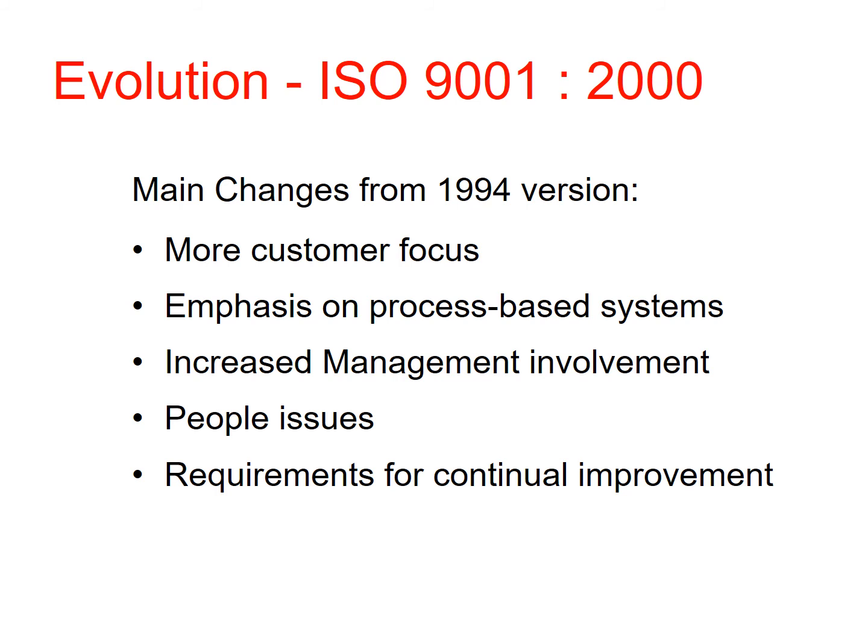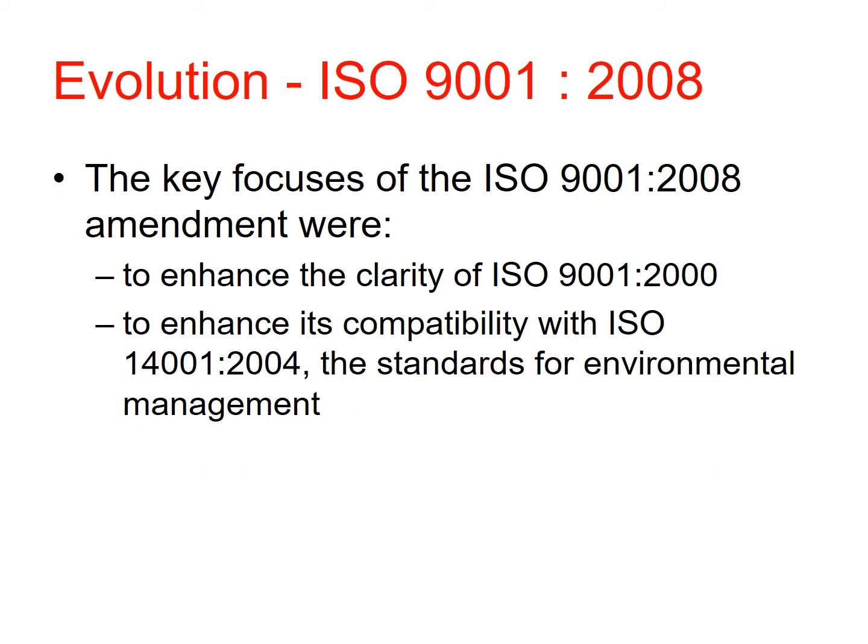In 2000, changes were made from the 1994 version: greater focus on customers, emphasis on process-based systems, increased management involvement, focus on people issues, and introduction of requirements for continual improvement. In 2008, there were amendments mostly to provide clarity to some of the vocabulary and explanations, and to enhance compatibility with ISO 14001 environmental standards, which were becoming much more recognised and important at that time.